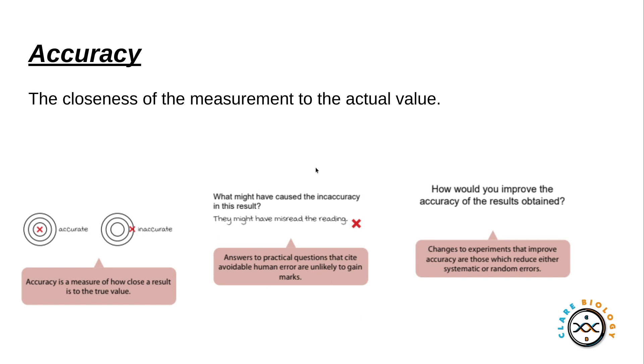Quite often students will say in the exam that something has gone wrong with an experiment because someone has made a mistake, for example misreading a reading. It is really unlikely you would ever get a mark for this in the exam.